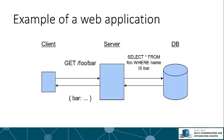Let's look at all these concepts in a single example web application with a client, a server, and a database. A client makes a GET request asking for the foo resource with value bar — similar to a URL like customer/9. The server queries the database, something like SELECT * FROM foo WHERE name IS bar. The database returns matching data, the server formats and sanitizes it, then returns a representation to the user — perhaps in JSON or XML. This highlights the intersection between the REST model, an API, and HTTP.